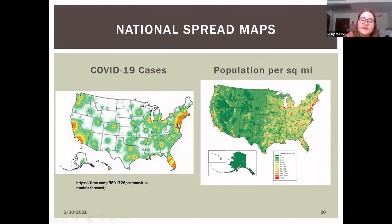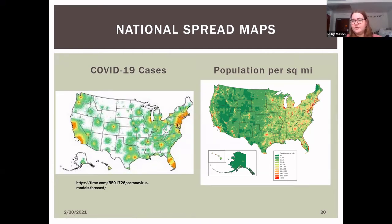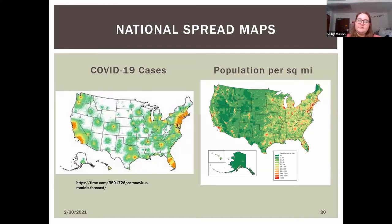In California, Florida, and the East Coast, areas that are red on both the population density graph and the COVID cases graph indicate higher population density correlating with higher concentrations of COVID-19 cases. This can be attributed to higher contact rates, people living in closer proximity, and larger cities with big airports where people travel for business or tourism, spreading the disease.